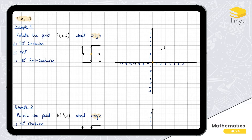In the first example we have to rotate the point A(2, 3) about the origin — that's our center — 90 degrees clockwise, 180 degrees clockwise, and 90 degrees anti-clockwise. Let's get straight to it.